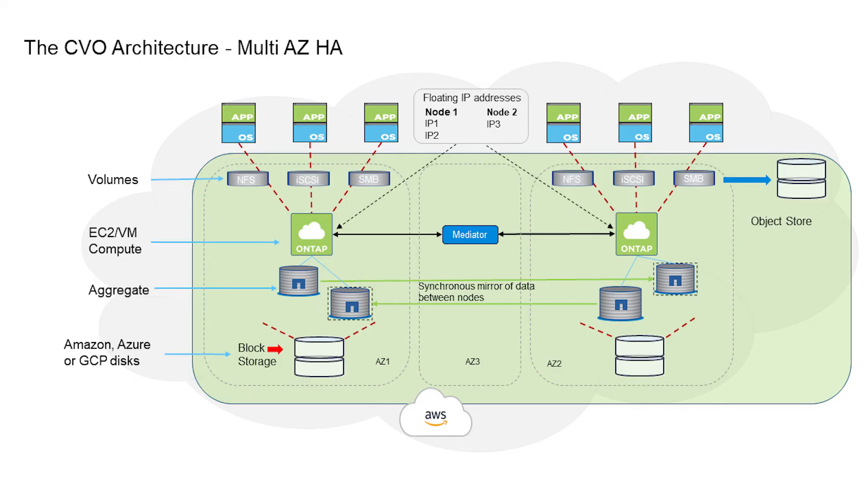Let's look at the network preparation for deploying CVO. Network preparation is mainly focused on what type of deployment model you chose. In our case, we chose a multi-AZ HA as a primary production deployment. Depending on the deployment, we need a number of IP addresses per node and also for the HA cluster, as well as floating IP addresses. Please bear in mind that all nodes — including the connector, the CVO nodes, and mediator — all require outbound internet access on port 443, which is required for normal operation. For AWS, we also need to provide a transit gateway that provides connectivity for the floating IP addresses outside the VPC.